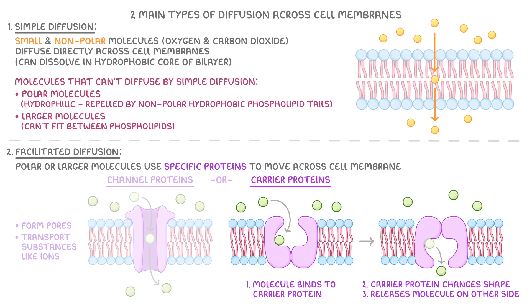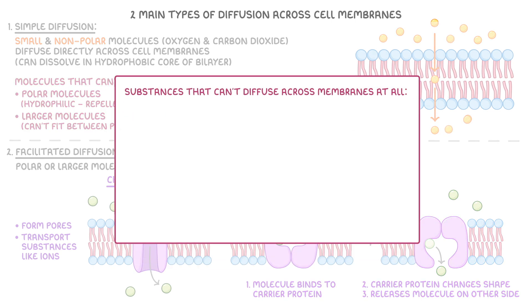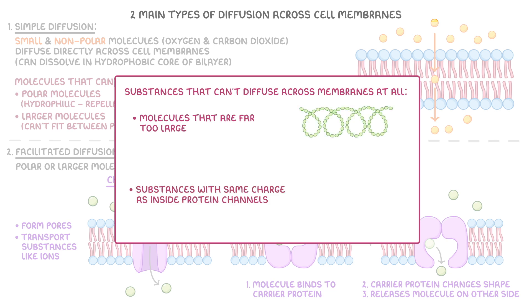It's worth noting at this point, though, that there are some substances that can't diffuse across cell membranes at all, even by facilitated diffusion. For example, molecules that are far too large to fit into channel or carrier proteins, like starch, or substances with the same charge as the inside of the protein channels. For instance, if this protein channel had a negative charge, negatively charged ions would be repelled by it and so couldn't move through it.